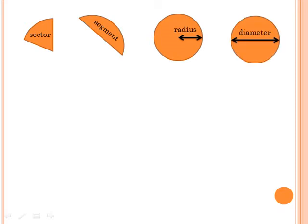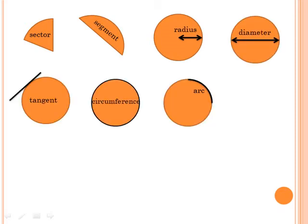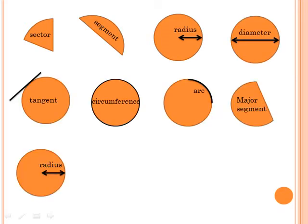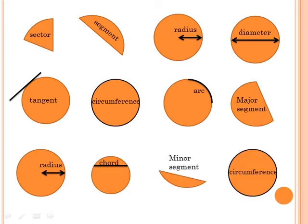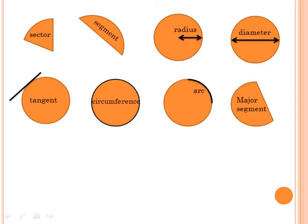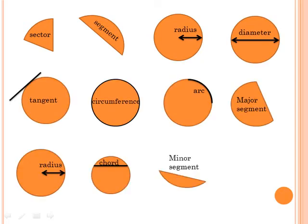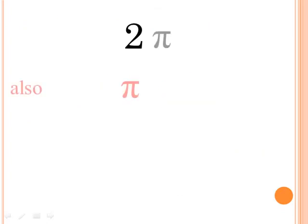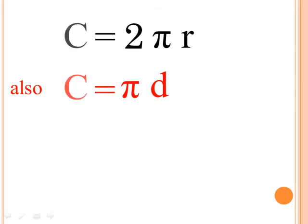Sector, segment, radius, diameter, tangent, circumference, arc, major segment, radius, chord, minor segment, circumference. Two times pi times r is circumference.